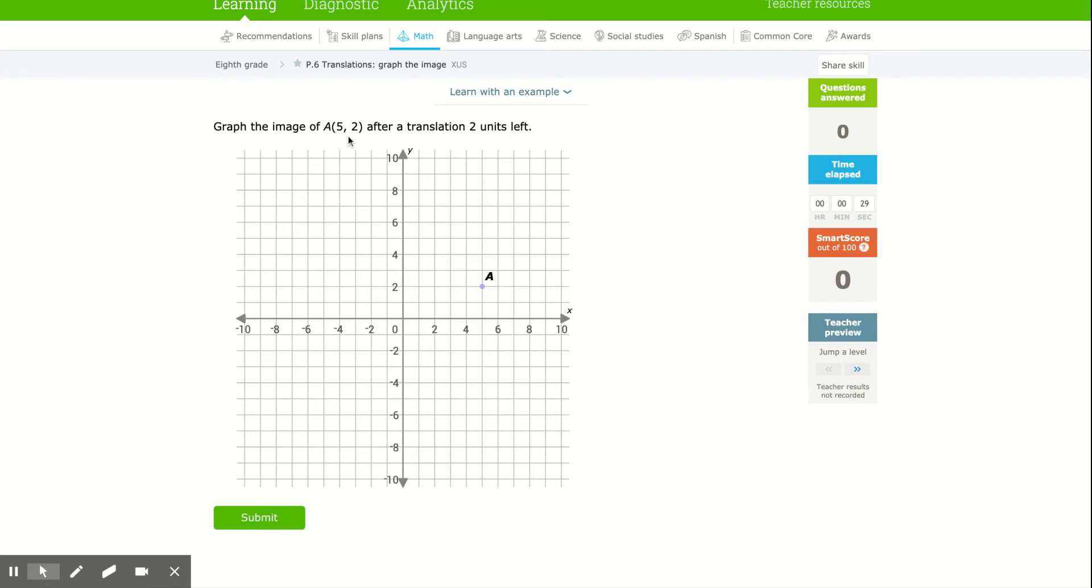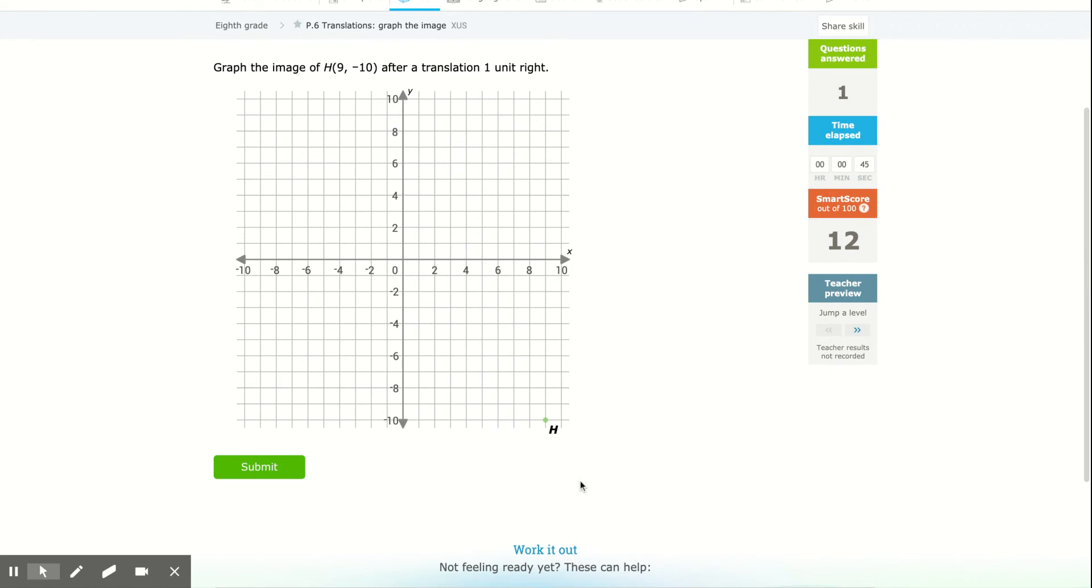So we're going to graph the image of this point, 5-2, which is point A, after a translation. All a translation means is to move it two units left, since it says left. So I just put a point there and hit submit, and booyah, we're good, right?